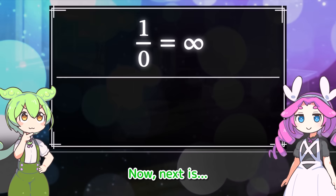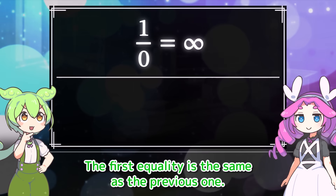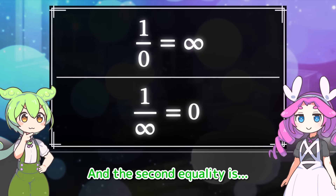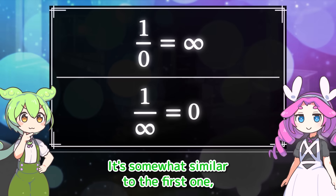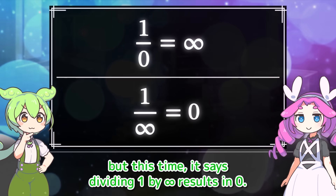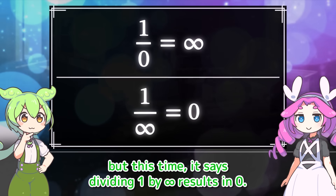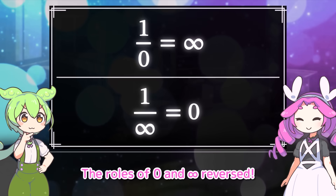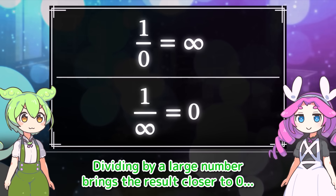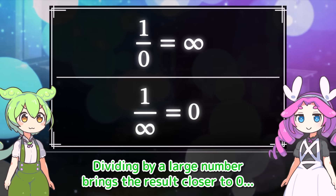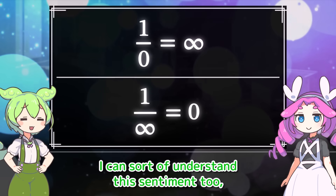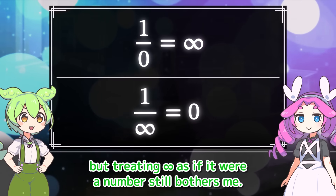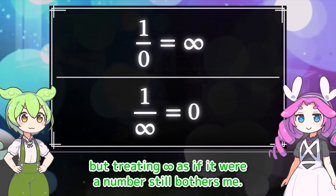The first equality is the same as the previous one. The second equality is somewhat similar, but this time it says dividing 1 by infinity results in 0 — the roles of 0 and infinity reversed. Dividing by a large number brings the result closer to 0. I can sort of understand this sentiment too, but treating infinity as if it were a number still bothers me.